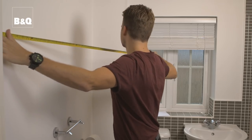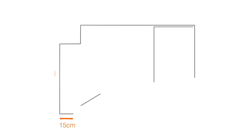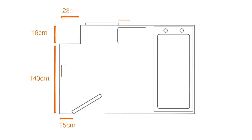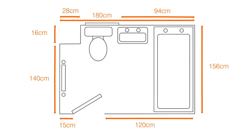Start by measuring between each fixed point in the room. This means measuring the distance from the edge of the door frame architrave to the corner of the room, the corner of the room to the window reveals and so on. Also measure the size and position of all fixed objects including the bath, toilet etc. Record the dimensions as you go. Pick a starting point and work clockwise from it to make sure that you don't miss anything out.